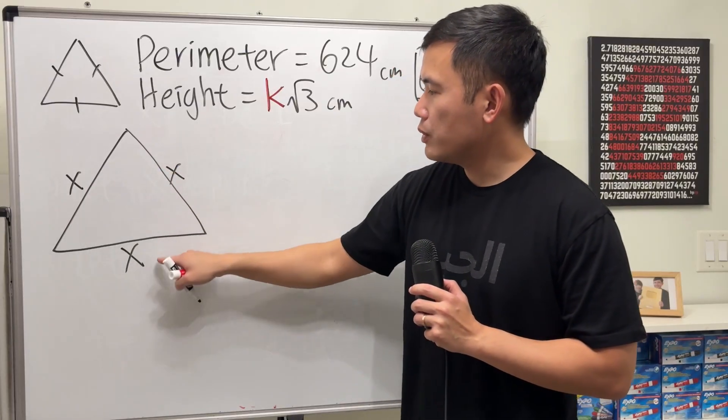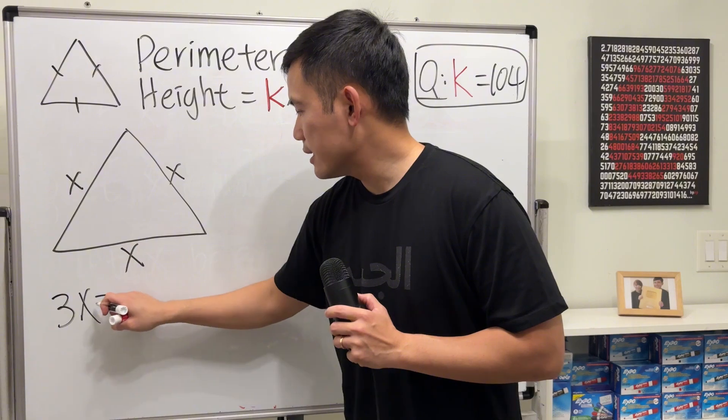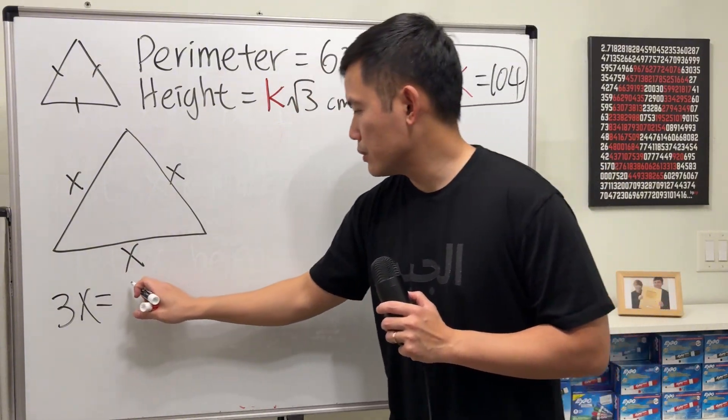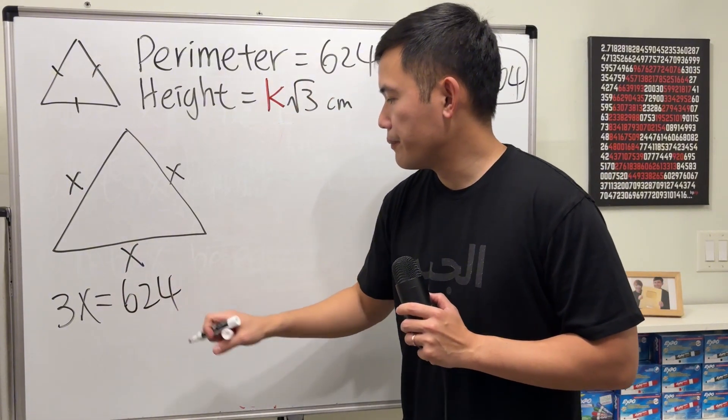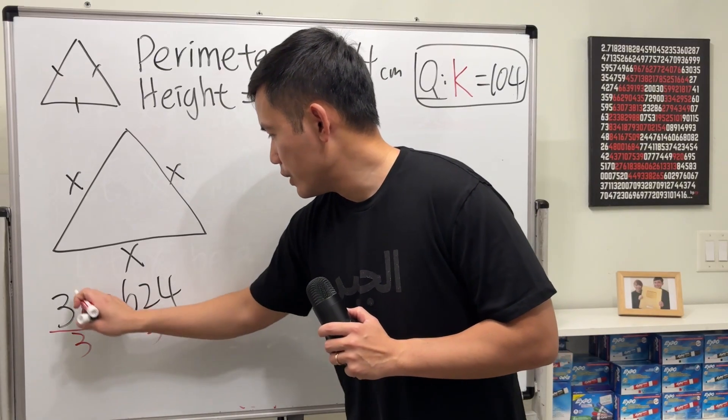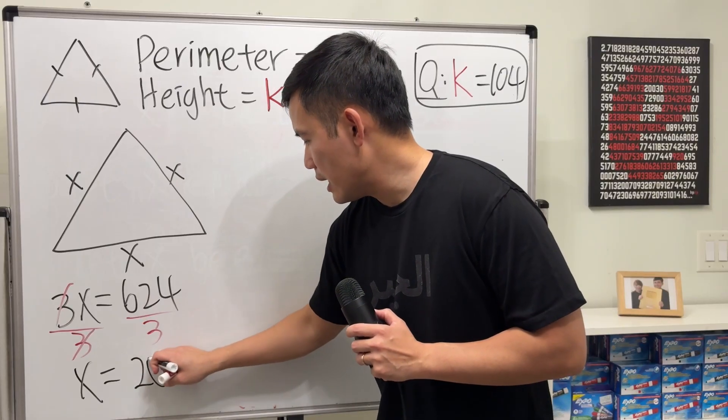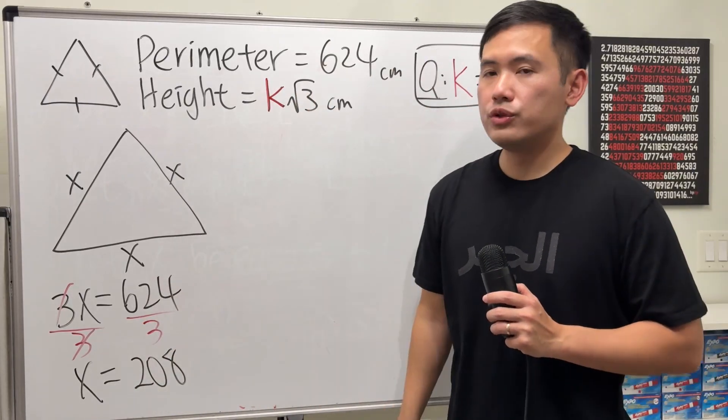And when we add them up, we will have a total of 3x, and that has to be equal to 624. And now divide both sides by 3, we can see x is equal to 208. So each side is 208.